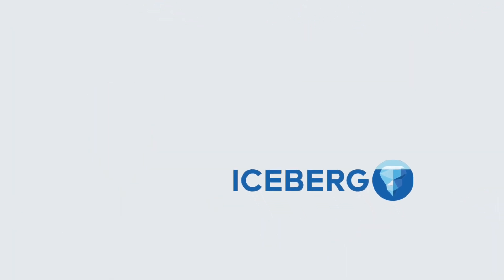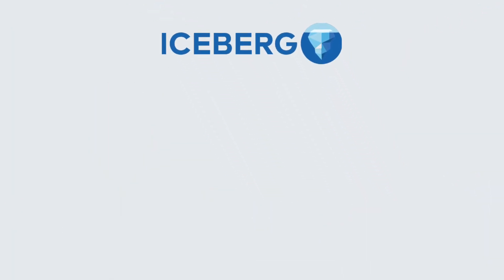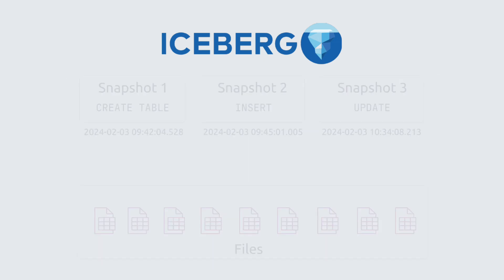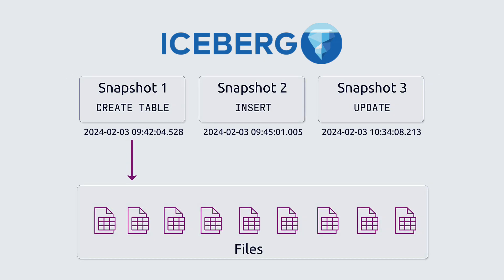But first, what is Iceberg? It's a layer of metadata over your object storage. It provides a transaction log per table, very similar to a traditional database. This log keeps track of the current state of the table, including any modifications. It also keeps a current snapshot of the files that belong to the table and statistics about them, in order to reduce the amount of data that needs to be read during queries, which greatly improves performance.